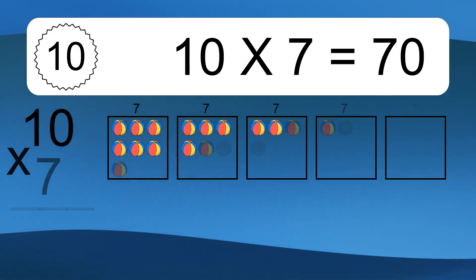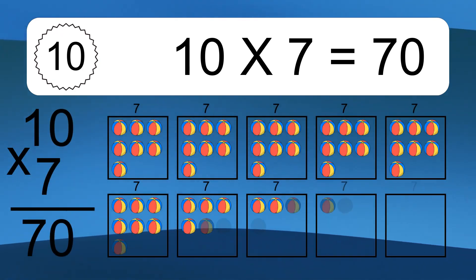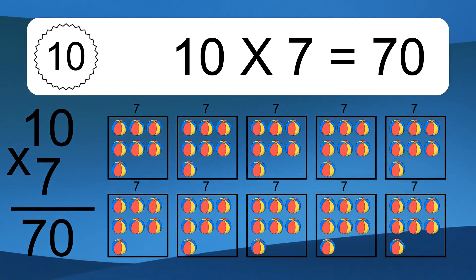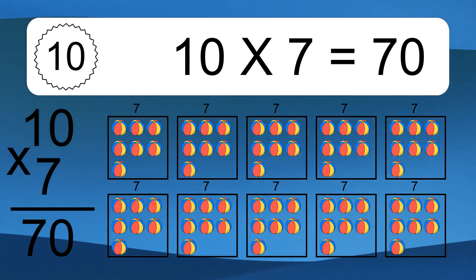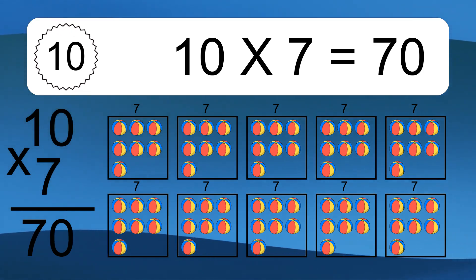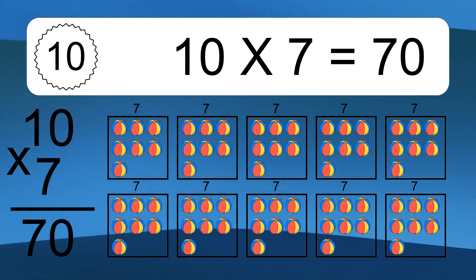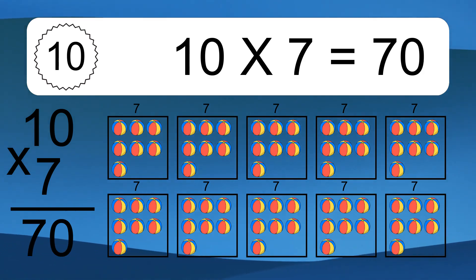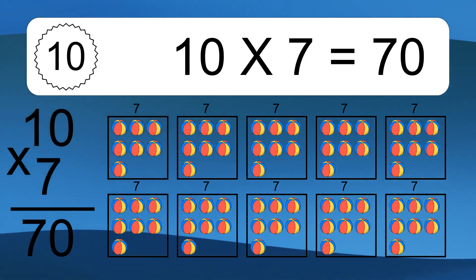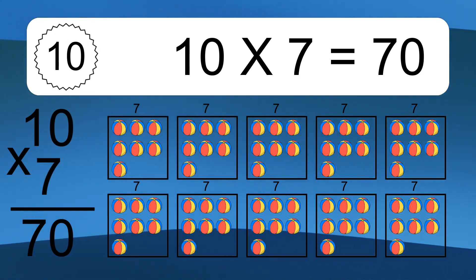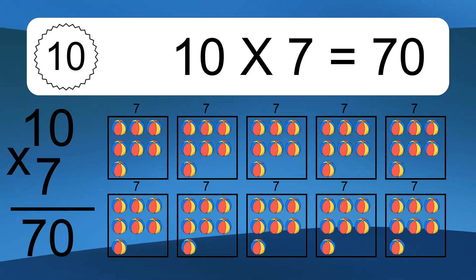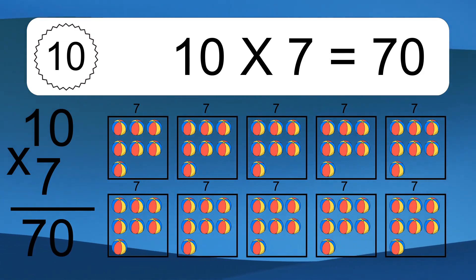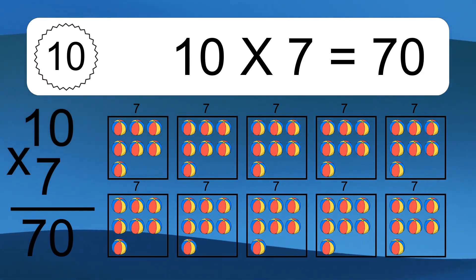10 times 7 equals 70. We have 10 boxes, and each box has 7 colorful balls inside. If you count all the balls in all the boxes together, you will have 10 times 7 balls. This equals 70 balls.